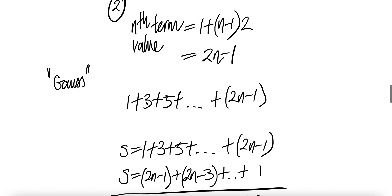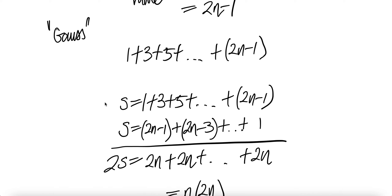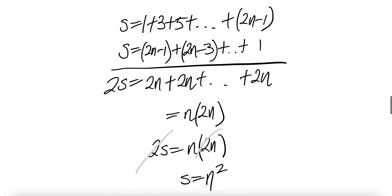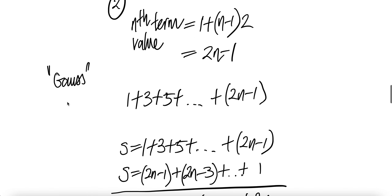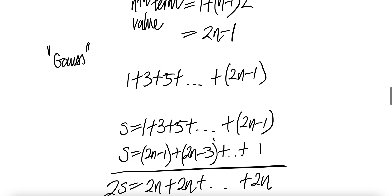Now we have one plus three plus five all the way to two n minus one. We're going to use the Gauss technique: write s as the sum in ascending order, and another s in descending order — they produce the same sum. Adding vertically: one plus two n minus one gives two n; three plus two n minus three gives two n; two n minus one plus one gives two n. There are n pairs of two n, so two s equals n times two n, and two and two cancel to give s equals n squared.